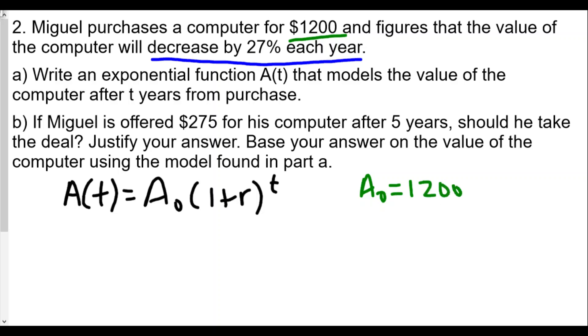The r value is decreasing, so r is negative 27%. This is the key thing—we're not adding value, we're taking away value. So we enter this into our formula: negative 0.27.